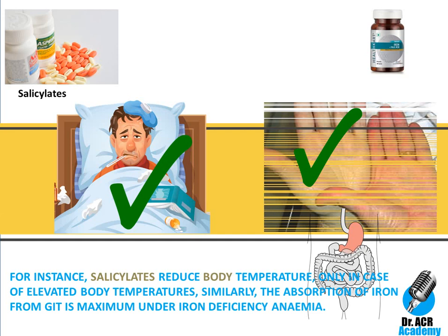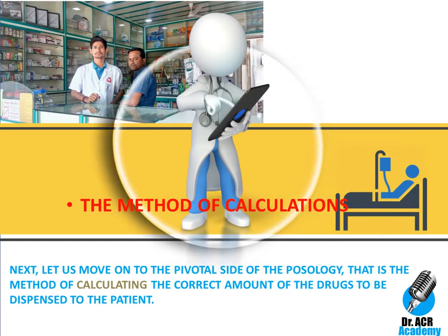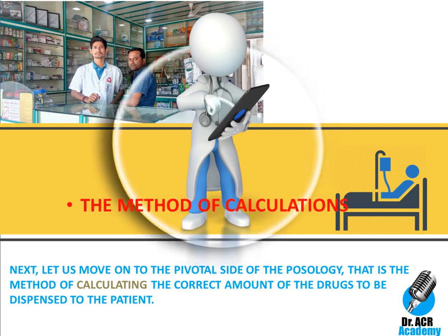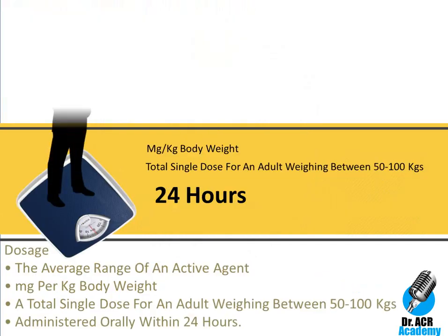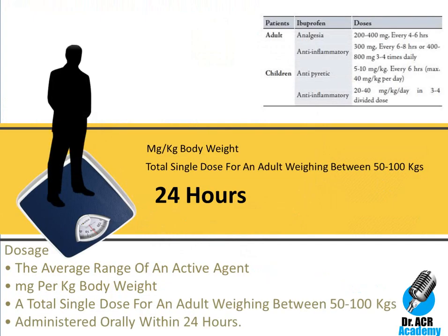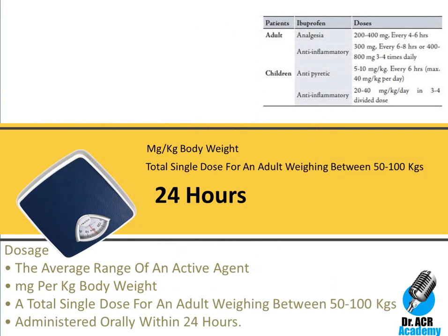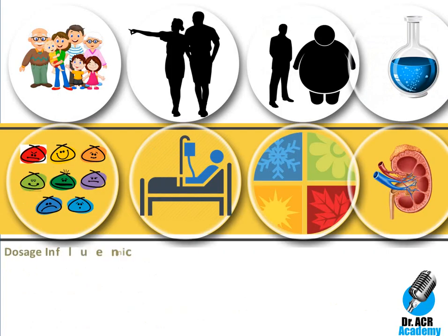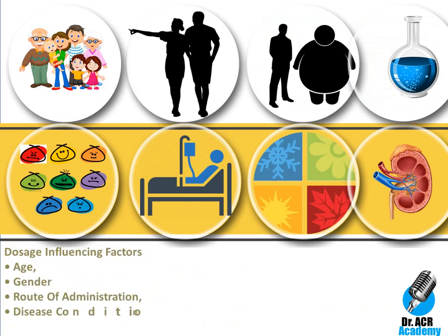Now let us move on to the pivotal side of dosage calculation — the method of calculating the correct amount of drugs to be dispensed to the patient. The dosage is defined as the average range of an active agent suitable for an adult, measured in terms of mg per kg body weight or as a total single dose for an adult weighing between 50 to 100 kg, administered orally within 24 hours. Various factors like age, gender, route of administration and disease condition need to be considered to dispense the accurate amount of the drug.